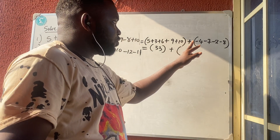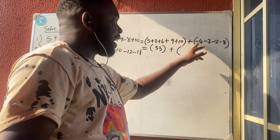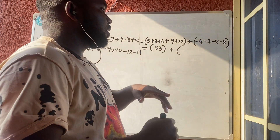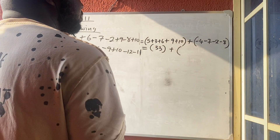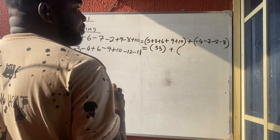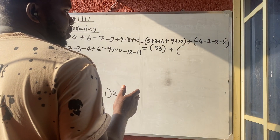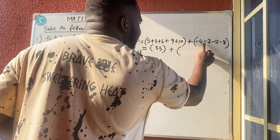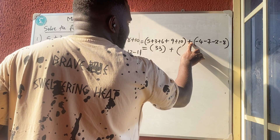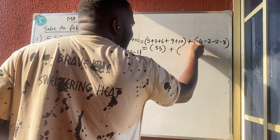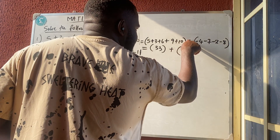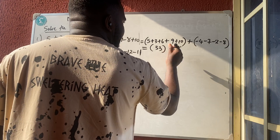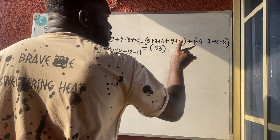Now remember the operation we are going to take — the answer will always take the sign of the bigger group. Or you can factorize: since everybody has minus, bring minus outside. That minus times plus gives minus, because they are not the same sign.